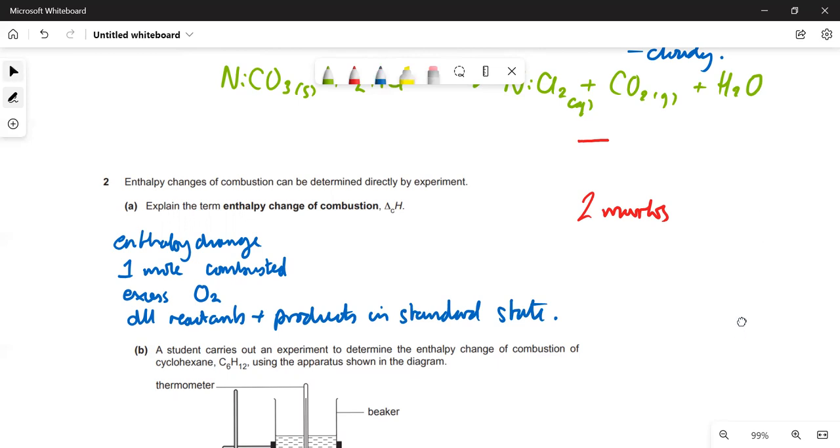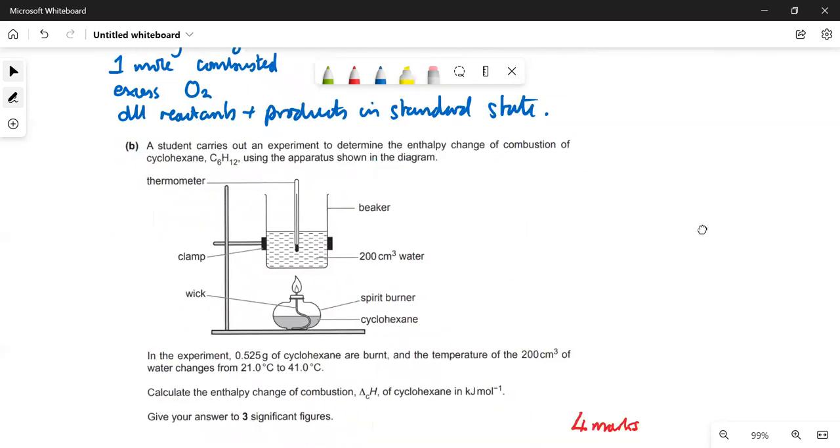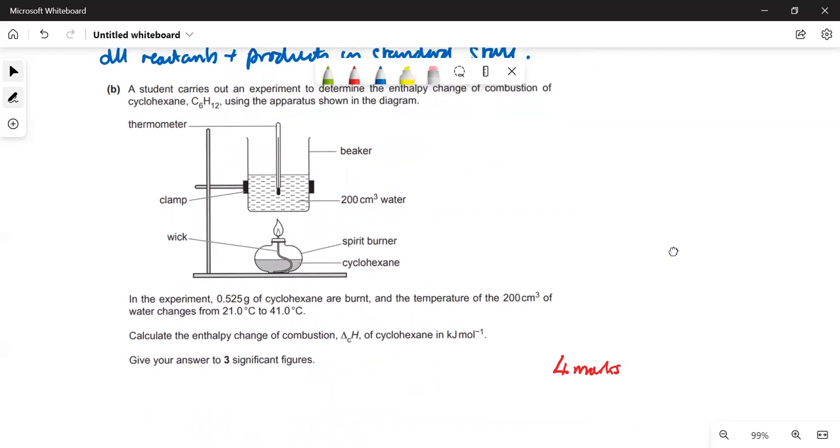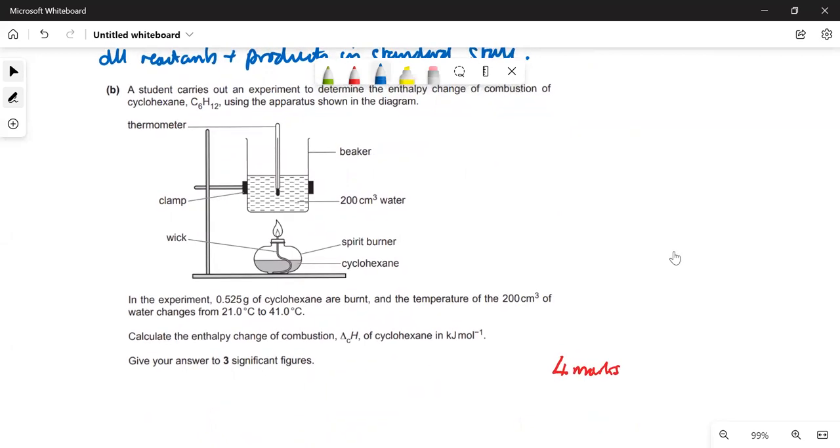For the calculation part, we've got a calorimetry experiment here. You're going to burn some cyclohexane in the burner and use it to heat 200 centimeters cubed of water. The temperature goes up from 21 to 41, so delta T is 41 minus 21, which is 20 degrees C. We've got this much cyclohexane. Cyclohexane is C6H12. The MR of cyclohexane is 84.